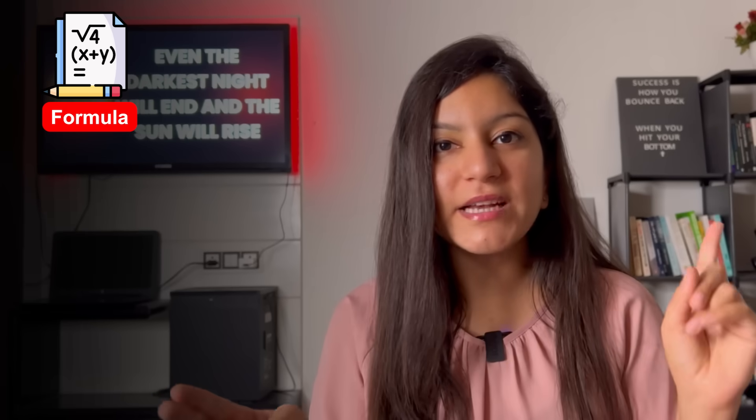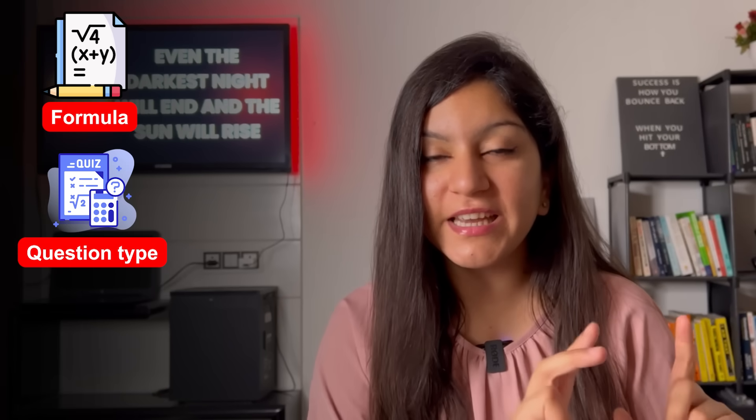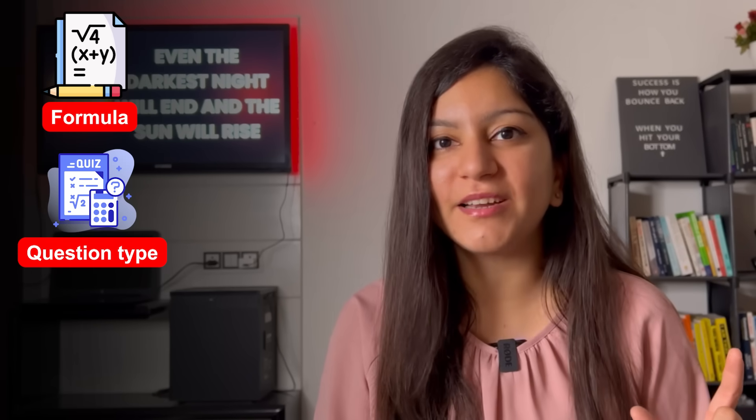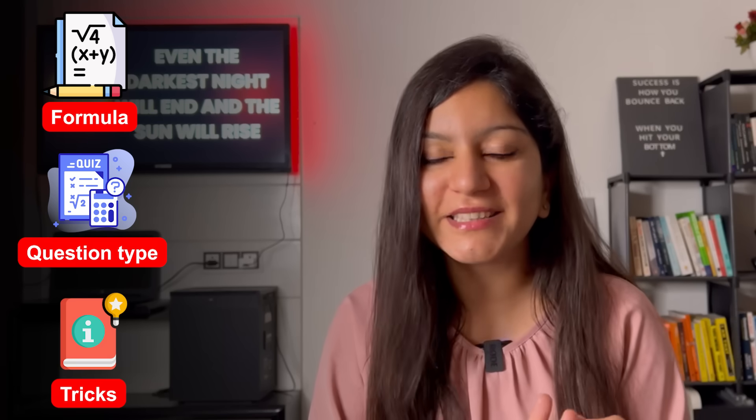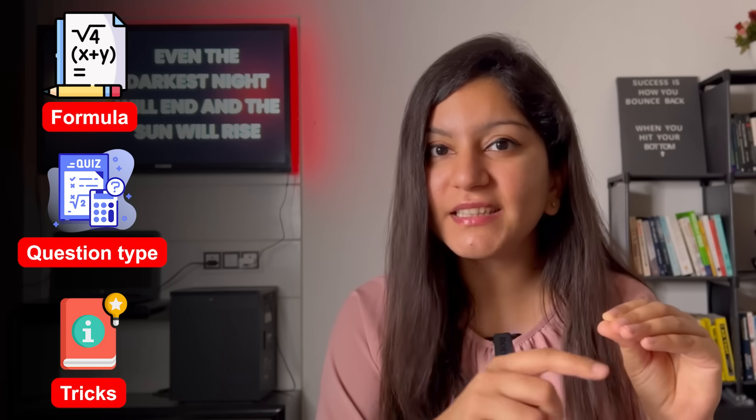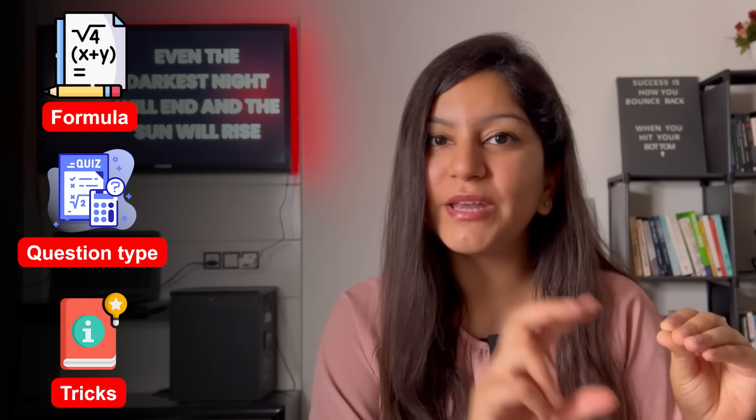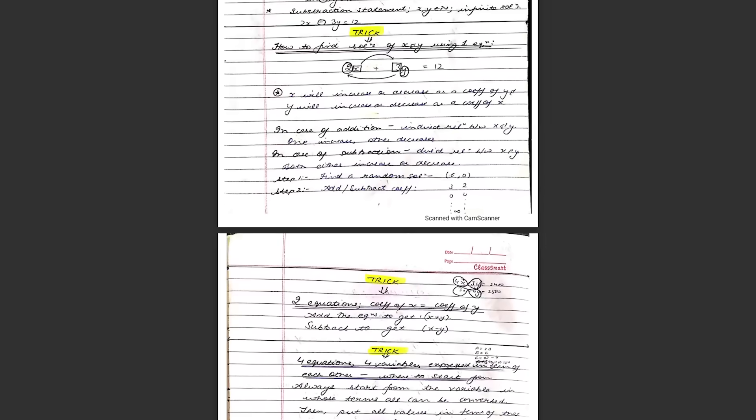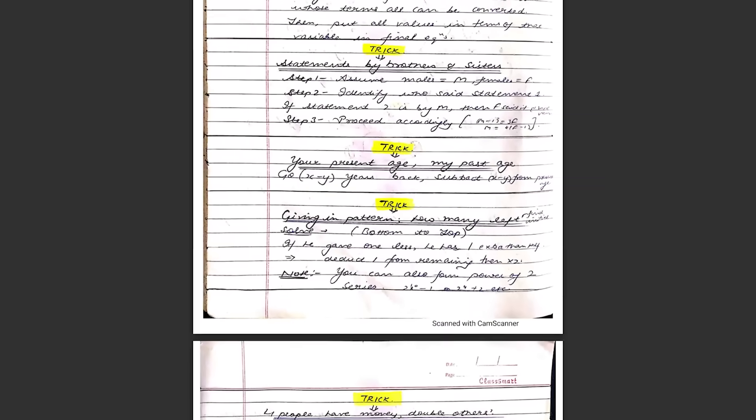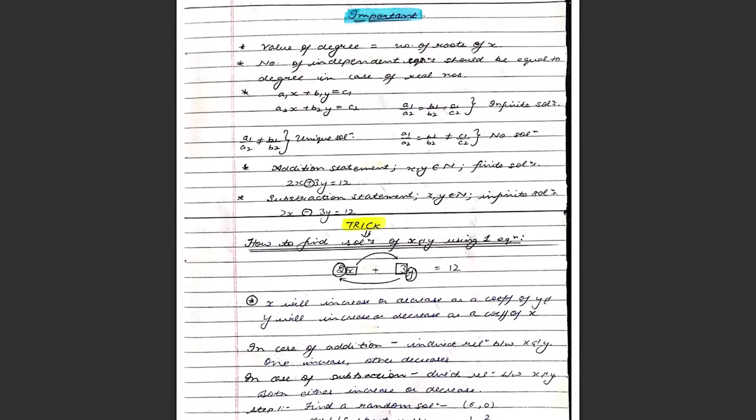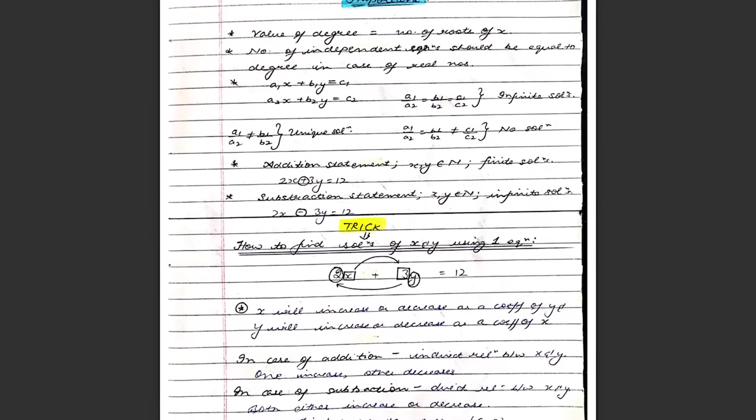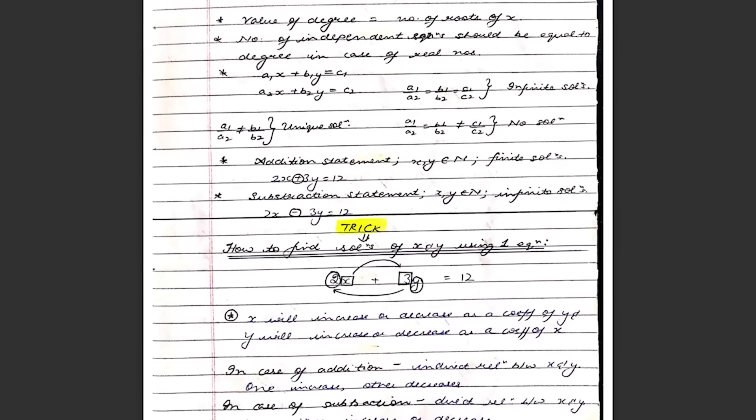You can write formulas, an important question which is a certain type of question, how to solve them, or tricks. With tricks, you can write a shortcut, or you can write an example so you can easily understand that trick. I will show you my formula book reference, how I made it. You will note the formulas in each chapter, and then leave a little space after each chapter.